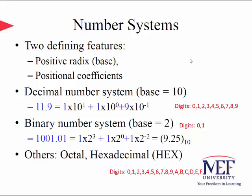There are also other important number systems, including octal and hexadecimal number systems. Since digits are represented by a single sign, it is conventional to use a, b, c, d, e, and f to represent the six additional digits of the hexadecimal number system.